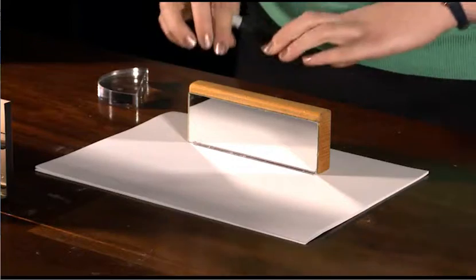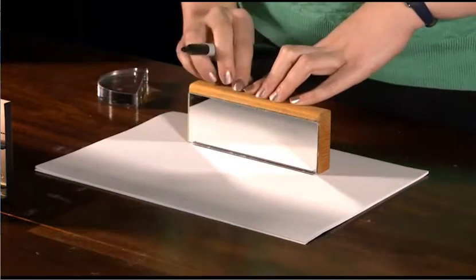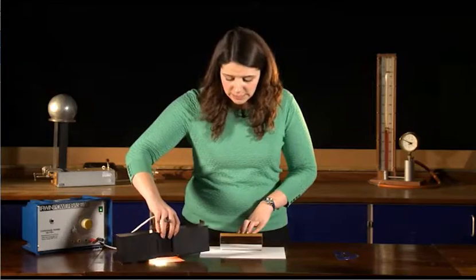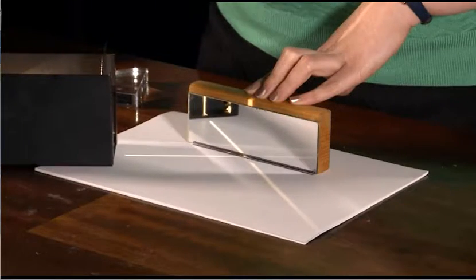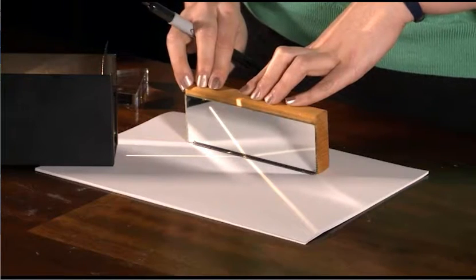First, I need to draw a line where my mirror is on my piece of paper for my ray diagram. Next, I'm going to position the ray box so the ray of light hits the mirror and bounces back, and we can see that if I angle it a little bit that way.